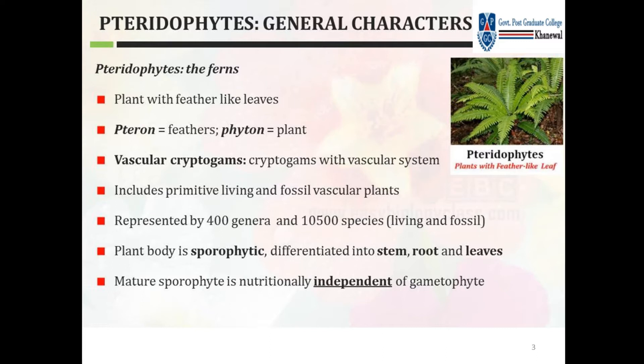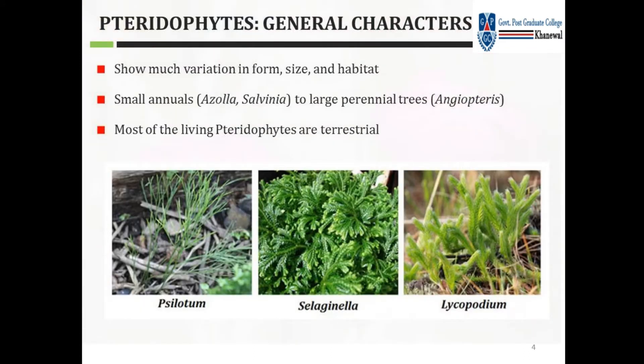The plant body is sporophytic, with stem, root, and leaves differentiated. The mature sporophyte is nutritionally independent and not dependent on the gametophyte. They show much variation in form, size, and habitat — from small aquatic plants like Azolla and Salvinia to large perennial trees like Gigopteris.